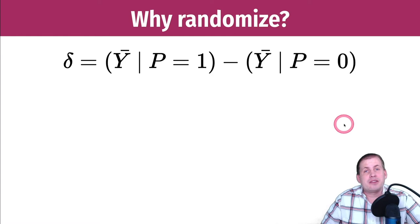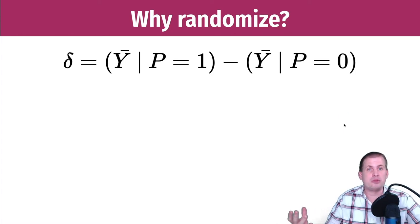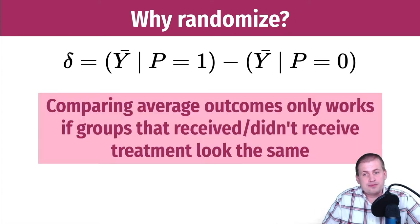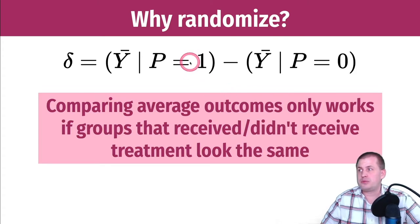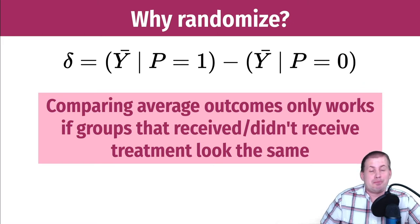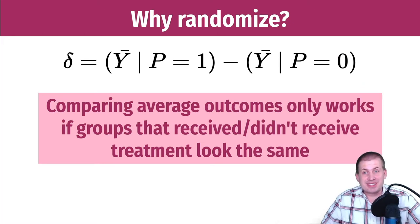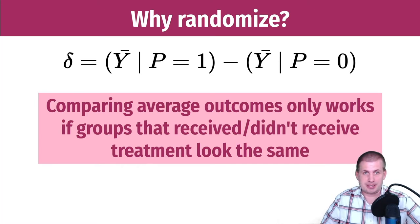Doing it this way — finding an average treatment effect for a whole group of people — only works if the two groups, program equals one and program equals zero, basically look the same. You can't have one group that self-selects into the program and one group that doesn't, because then your comparison is not going to be accurate.